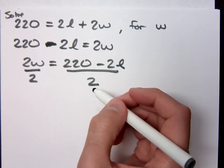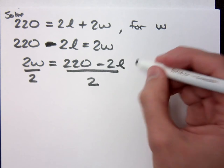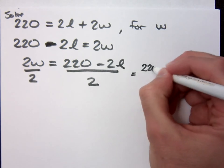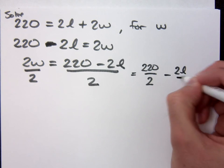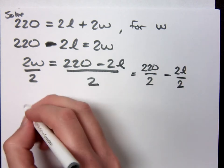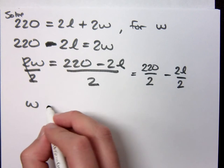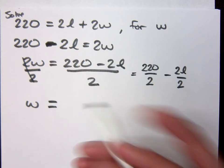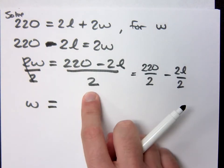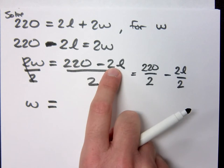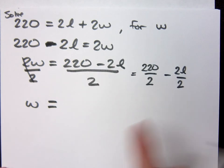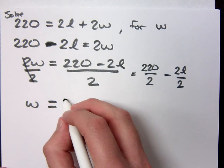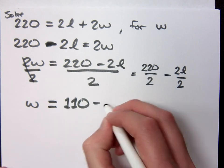Now what we need to remember here is that on the right side, this guy really means 220 divided by 2 minus 2L divided by 2, right? Because if I have a single denominator here, that's the denominator for both of those terms. Are you with me? I want you to reduce this though. What do we get? W=110-L.